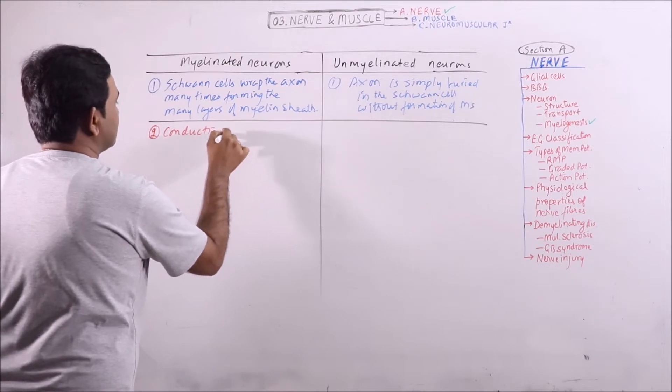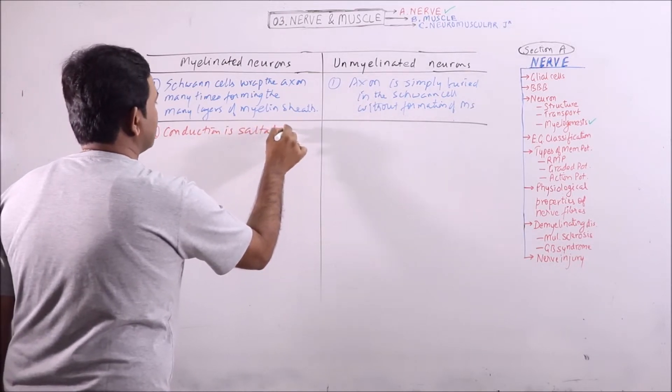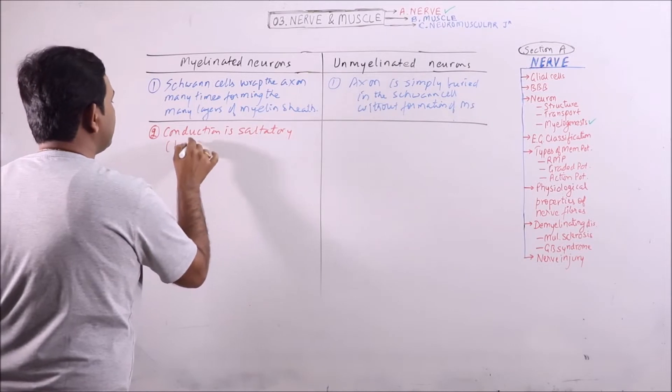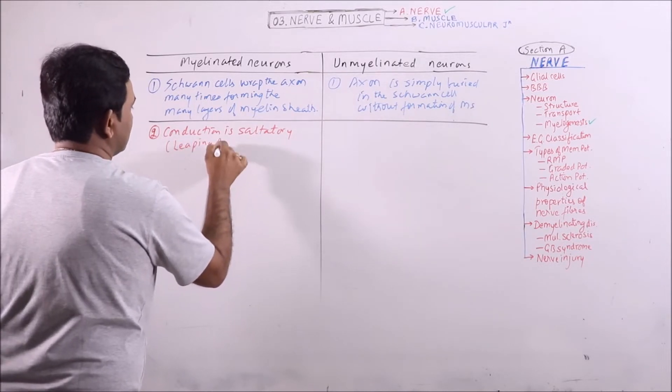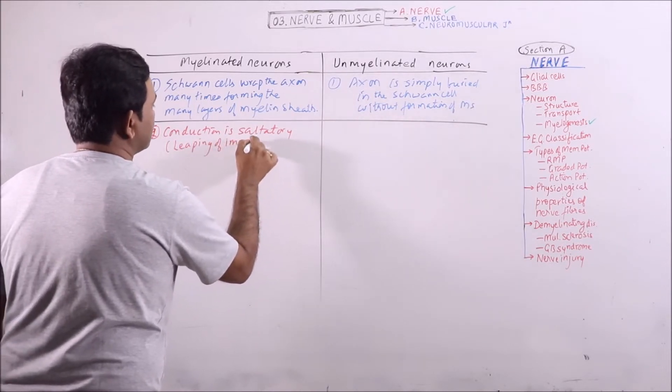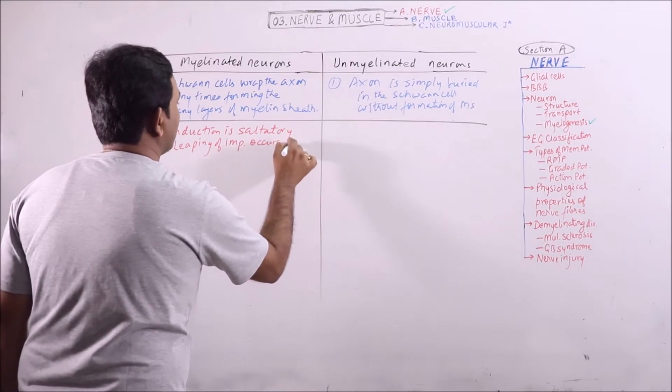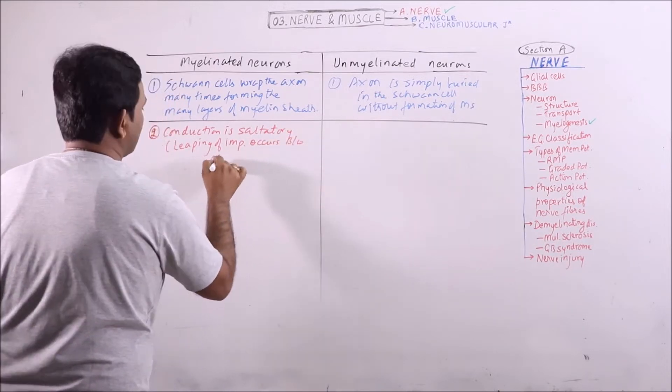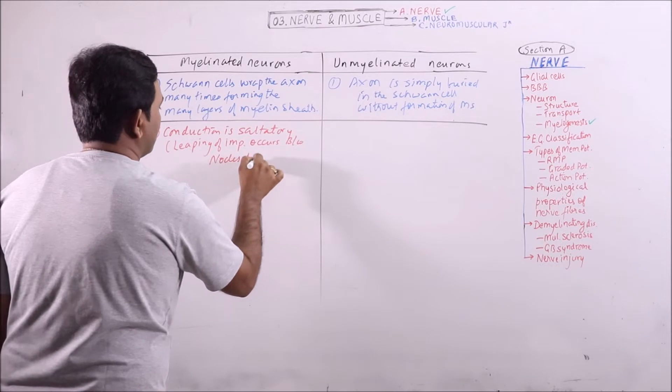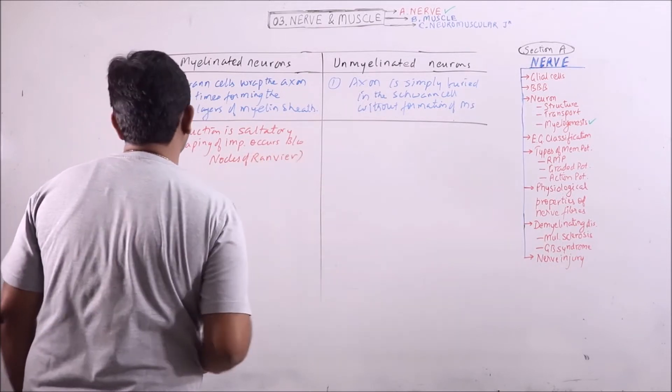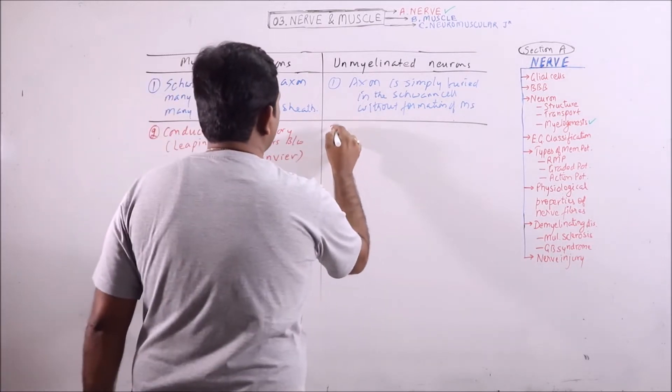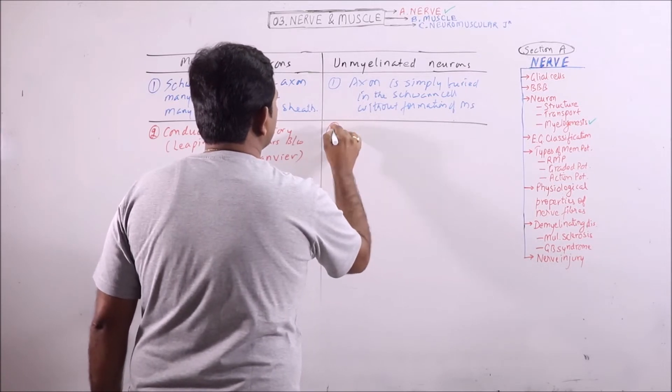Conduction is saltatory, that is leaping of impulse occurs between nodes of Ranvier. Here, continuous conduction occurs.